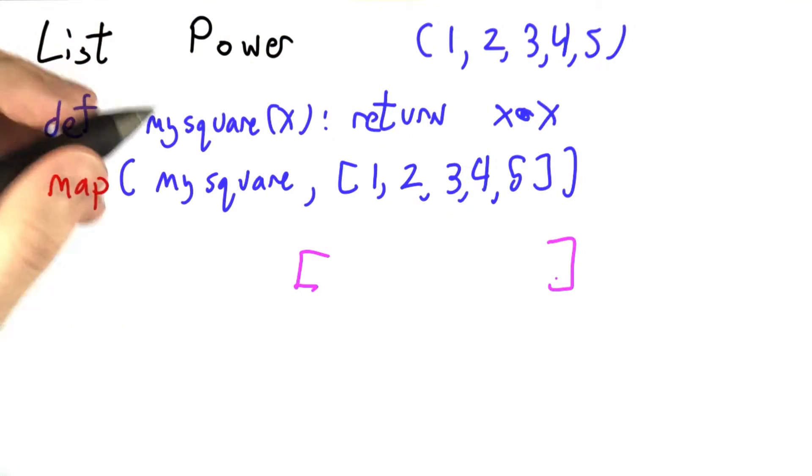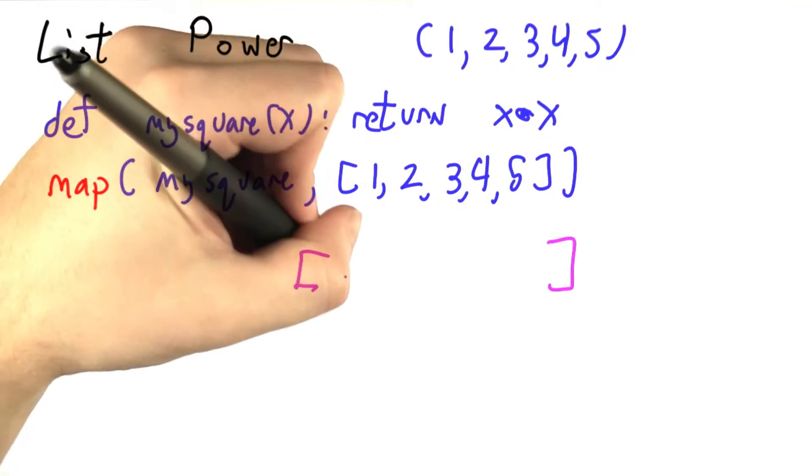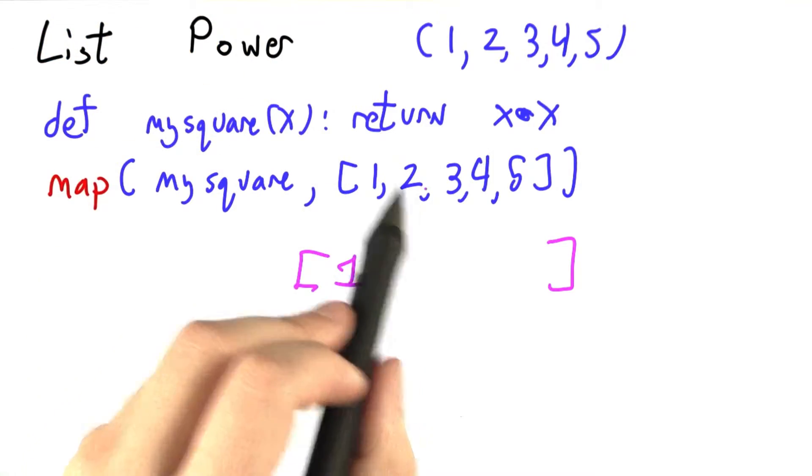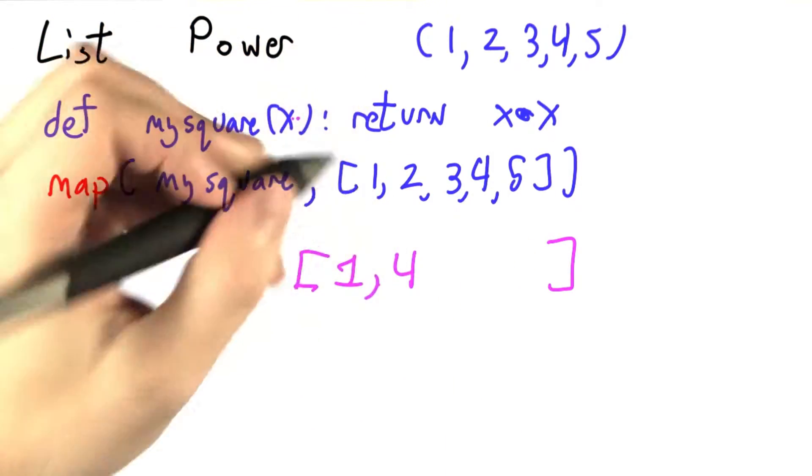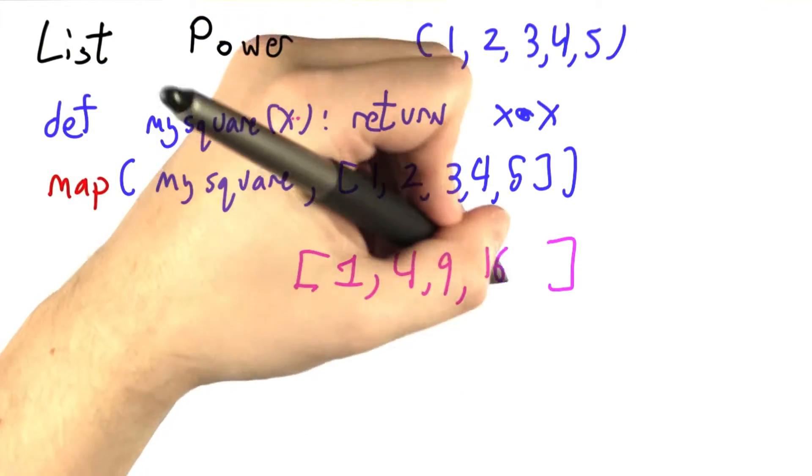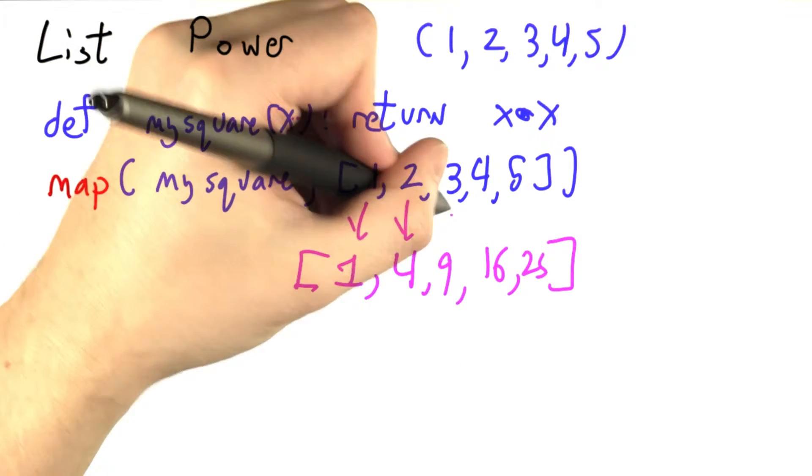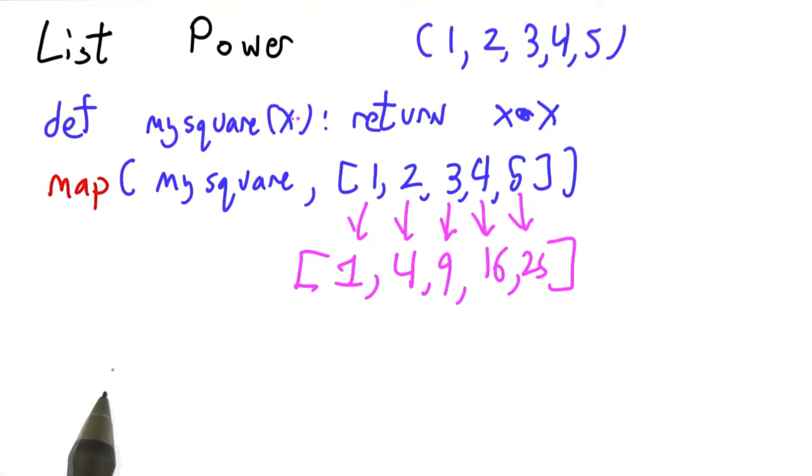So I'm going to make a new list down here that's the output of map, and we're going to take 1 and square it, so we get 1 times 1 is 1. Now we're going to take 2 and square it, 2 times 2 is 4, 3 and square it is 9, 4 and square it is 16, 5 and square it is 25. Each one of these led directly to part of my output.